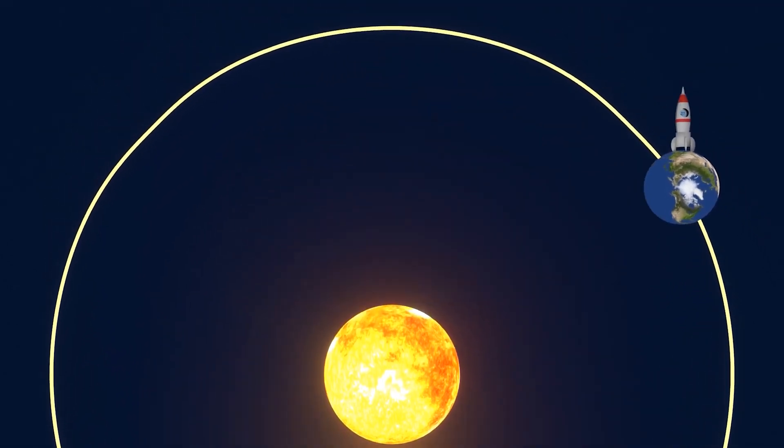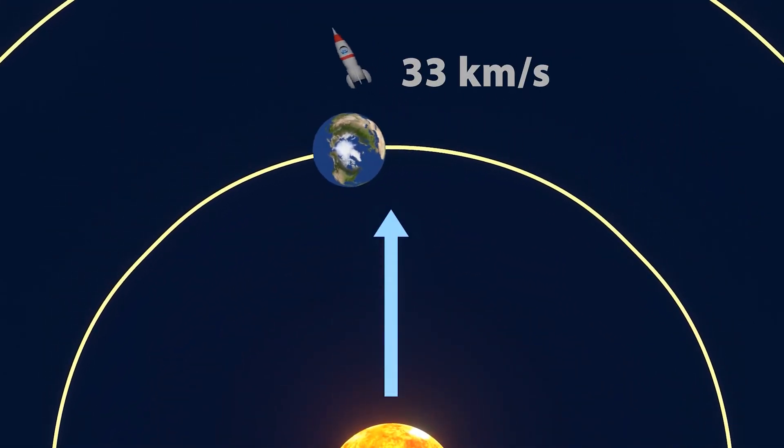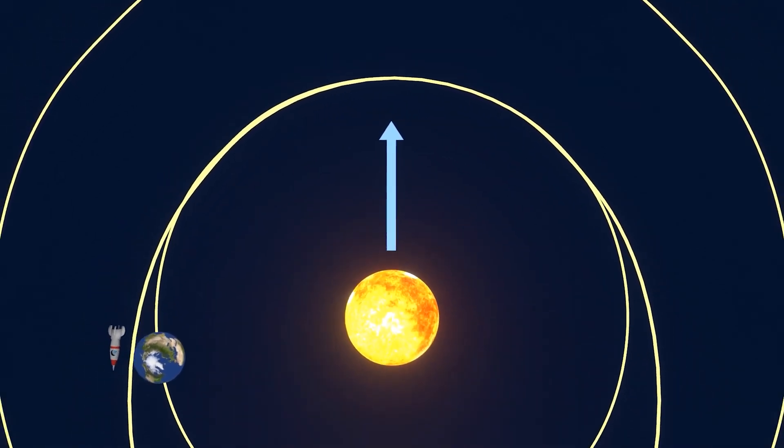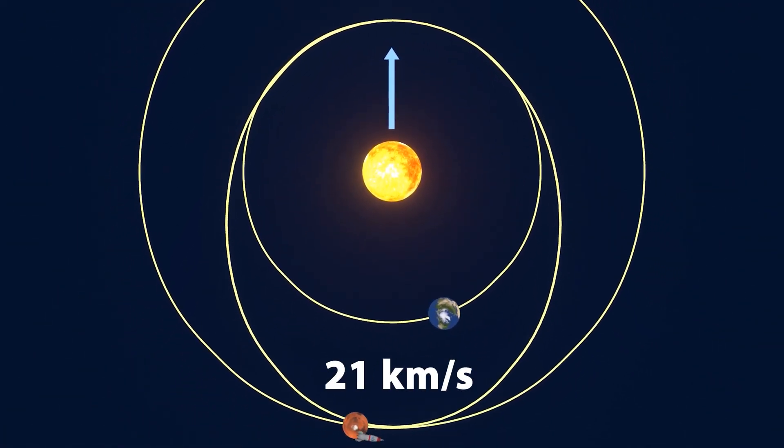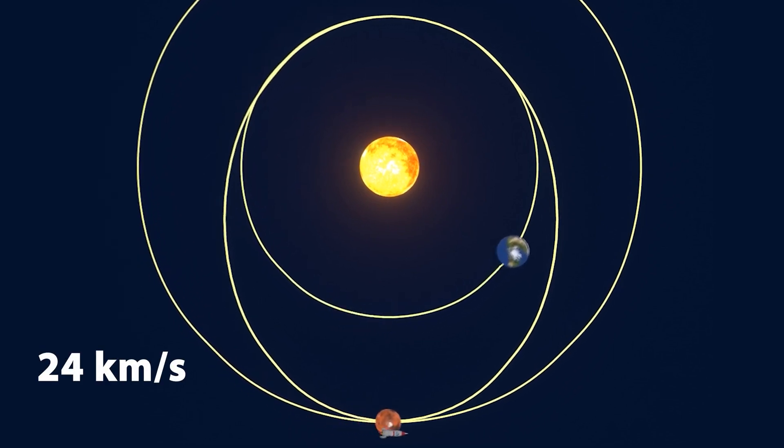A typical Hohmann transfer to Mars begins with a heliocentric velocity of 33 km per second, but as a spacecraft climbs the sun's gravity well, it slows down to only 21 km per second. Mars orbits the sun at 24 km per second, so the spacecraft has to approach from the front and let Mars catch up to it.